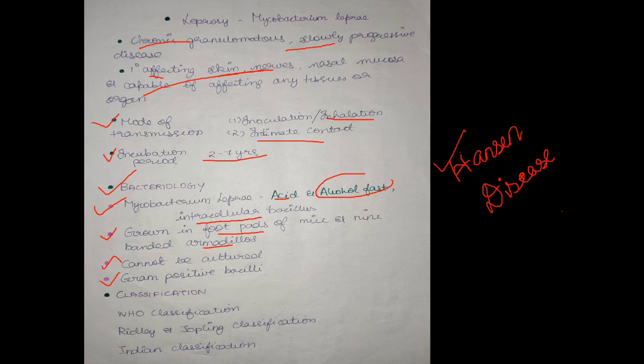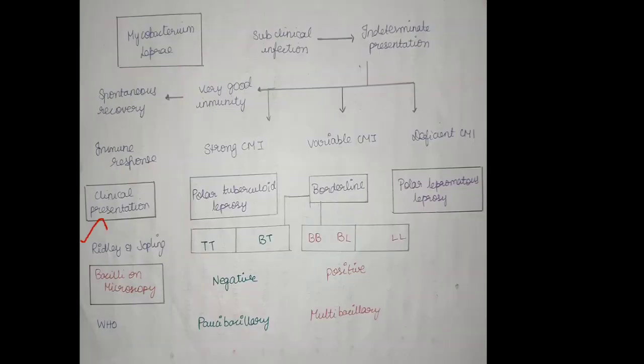There are three major classifications: WHO classification, the most important Ridley and Jopling classification, and Indian classification. Ridley and Jopling uses clinical pathological presentation, skin and nerve involvement, with five classifications.